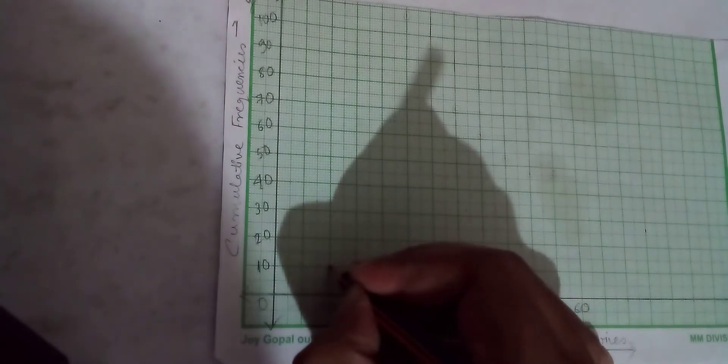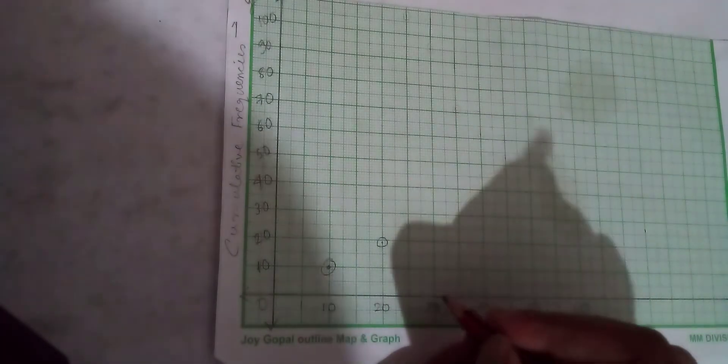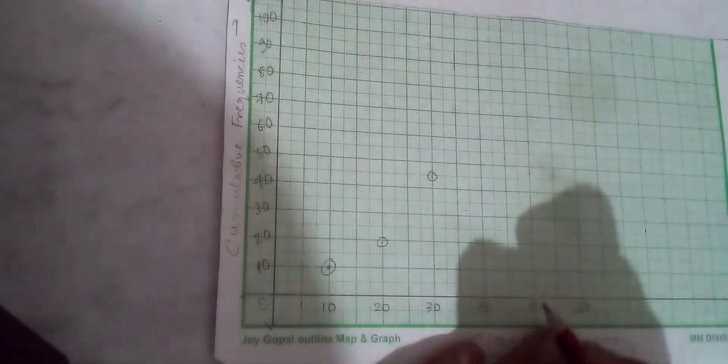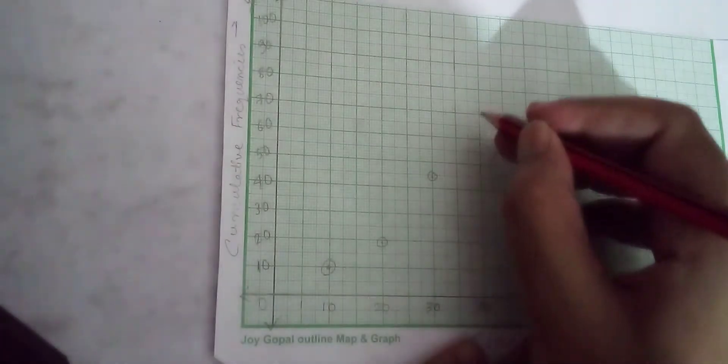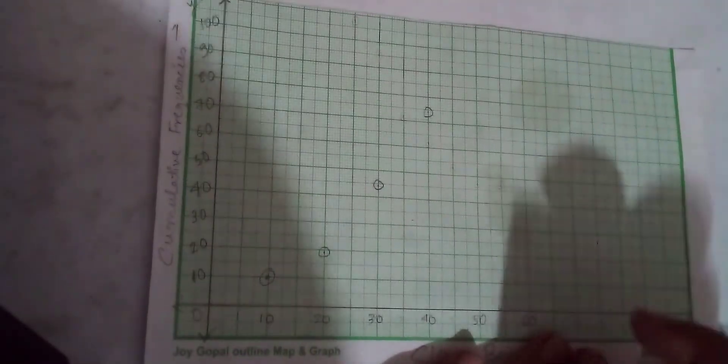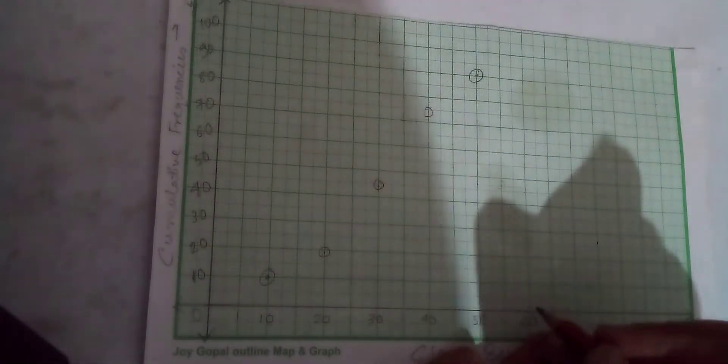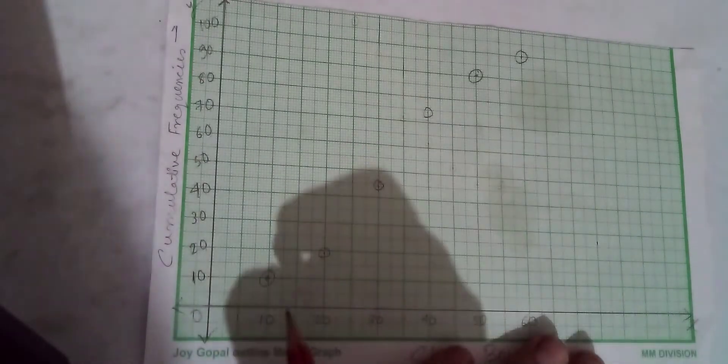We continue plotting these points: 30 comma 44, then 40 comma 74, then 50 comma 90, and finally 60 comma 100. We connect these points to form the ogive curve.